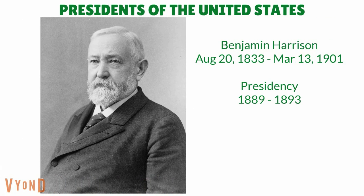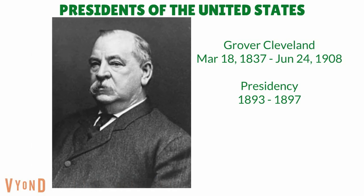Benjamin Harrison was our twenty-third president of the United States. He was born on August 20th, 1833. He was a president from 1889 to 1893. He retired in 1893 and later died on March 13th, 1901. He was the first president to die in the 20th century. Grover Cleveland was our twenty-fourth president of the United States. He was the only president to have two non-consecutive terms, being the twenty-fourth president after being the twenty-second. He was the twenty-fourth president from 1893 to 1897. He later retired in 1897 and died on June 24th, 1908.